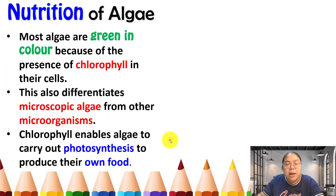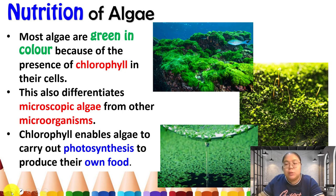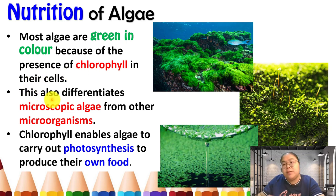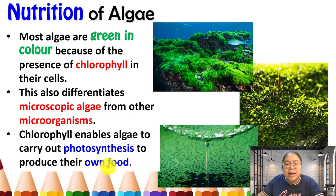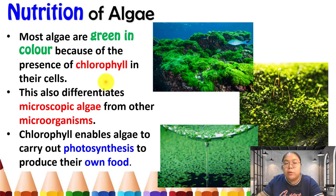Now the nutrition of algae. Since they have chlorophyll, algae can make their own food using the process of photosynthesis. Most algae are green because of the presence of chlorophyll in their cells. This enables them to carry out photosynthesis to produce their own food — they do not need to be saprophytes or parasites. Among the five microorganism groups, only algae can perform photosynthesis because they have their own chloroplasts containing chlorophyll.